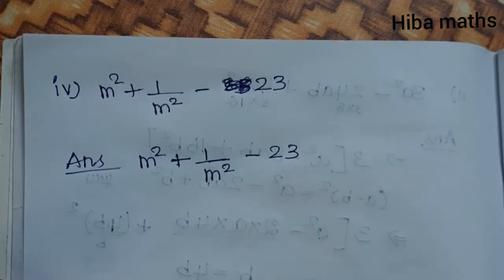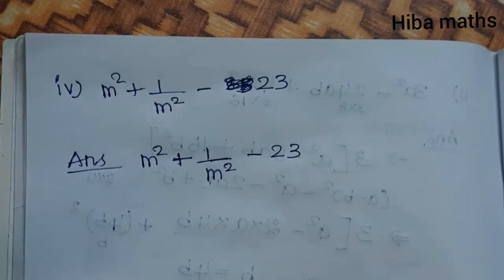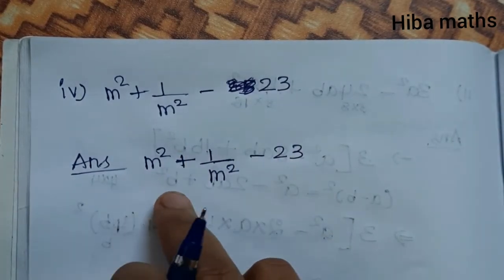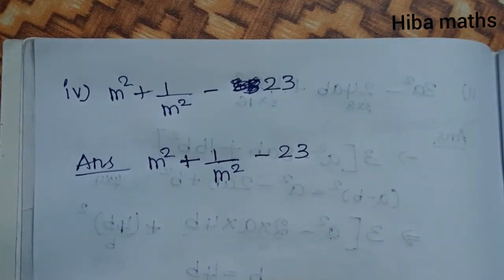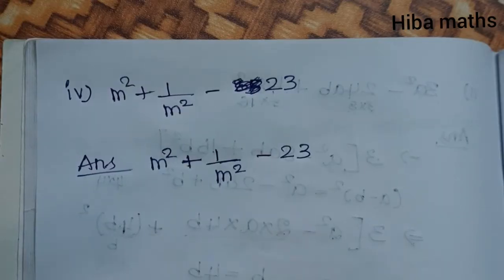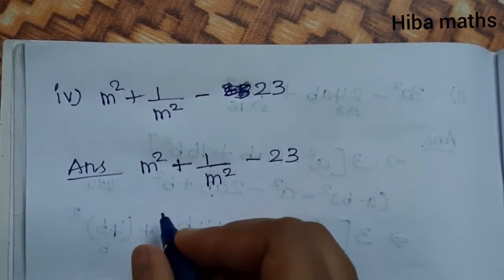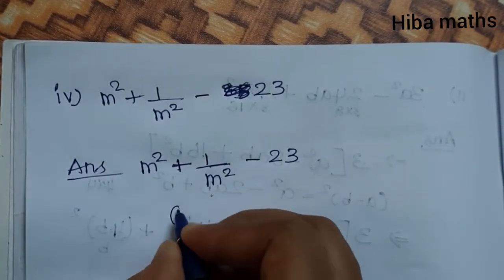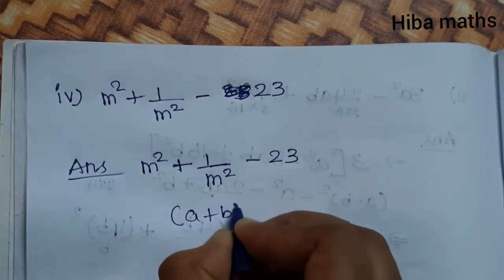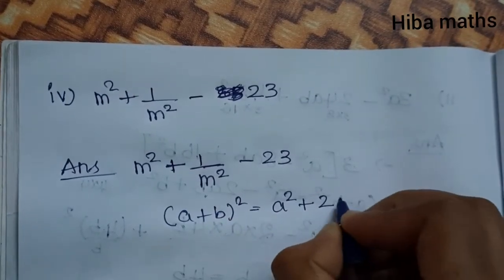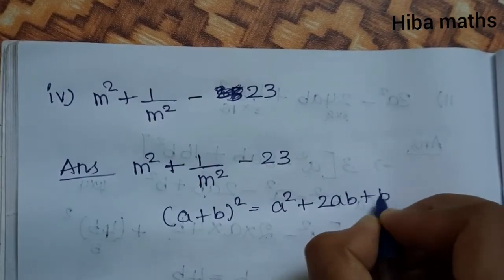Fourth question: m² + 1/m² - 23. We will use the identity approach here. Recall that (a + 1/a)² = a² + 2·a·(1/a) + (1/a)² , which simplifies to a² + 1/a² + 2.